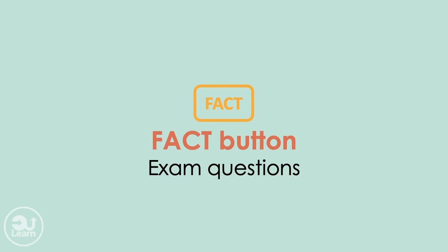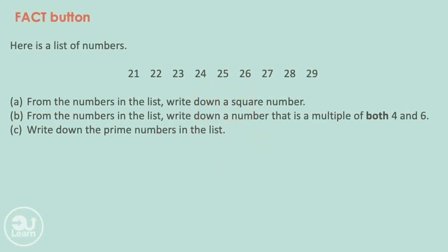Let's move on to an example. Here's a list of numbers: 21, 22, 23, 24, 25, 26, 27, 28, and finally 29. From the numbers in the list, write down a square number. Then from the numbers in the list, write down a number that is a multiple of 4 and 6. And finally, write down all the prime numbers in this list.